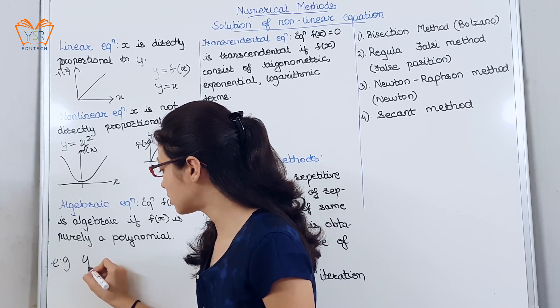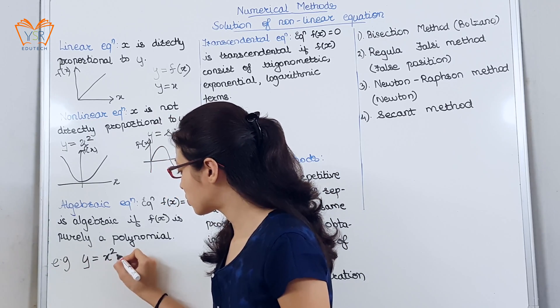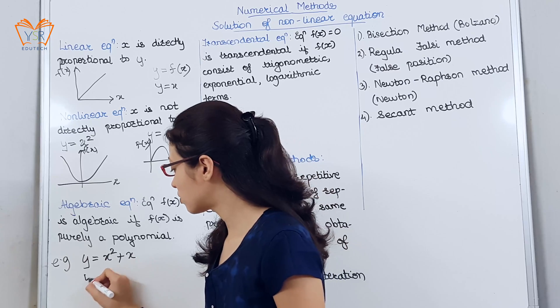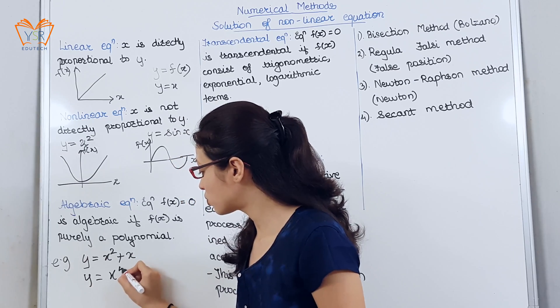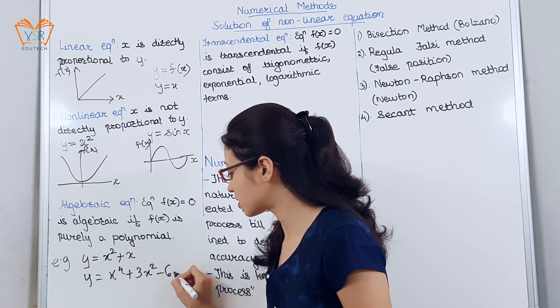Example: y = x² + x or y = x⁴ + 3x² - 6.